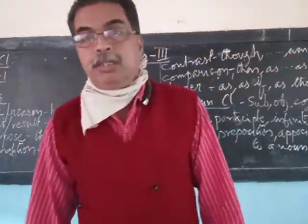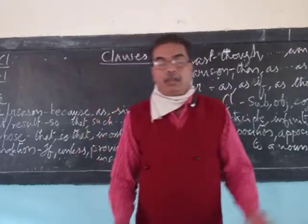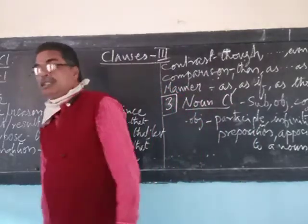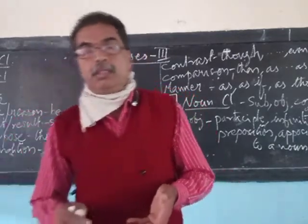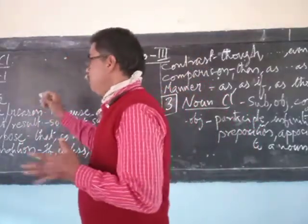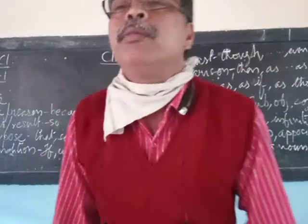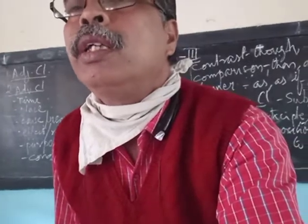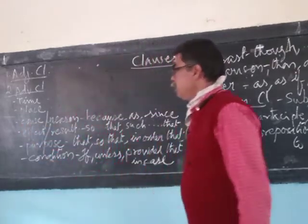An adjective clause is used to modify a noun in the main clause of the total sentence — the whole clause is used as an adjective. Similarly, an adverb clause modifies or describes the action of the main clause, or gives extra information about it. We covered adverb clause of time and place in the last class. Now we are going to see the third type of adverb clause.